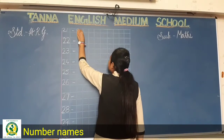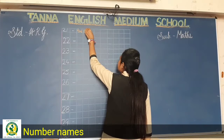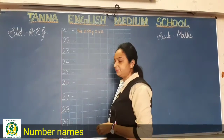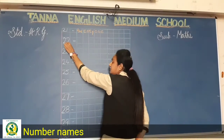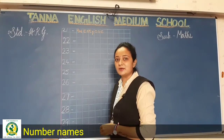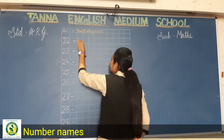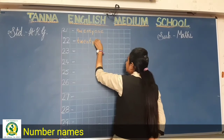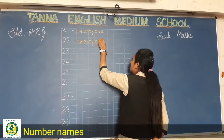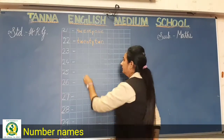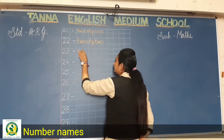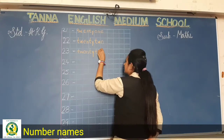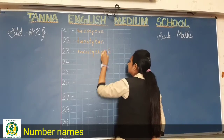For 21: write T-W-E-N-T-Y and then the spelling of one: O-N-E. For 22: T-W-E-N-T-Y and then the spelling of two: T-W-O. For 23: T-W-E-N-T-Y and then T-H-R-E-E.